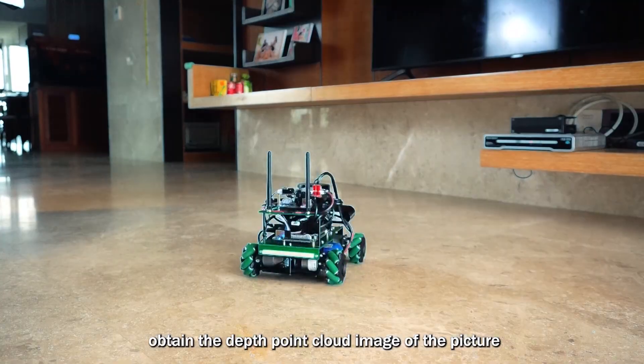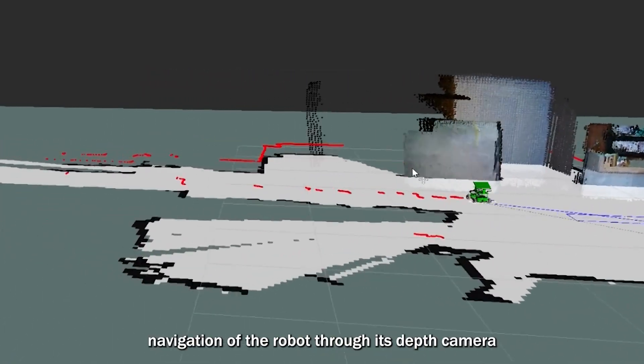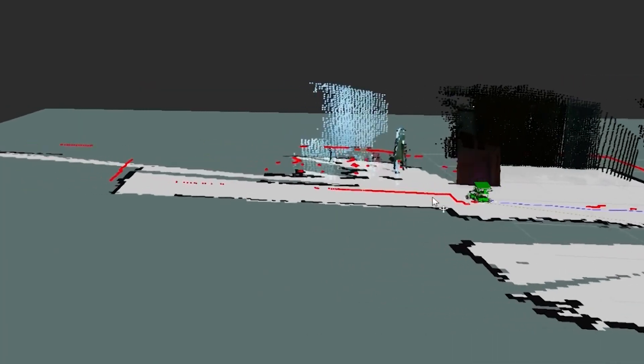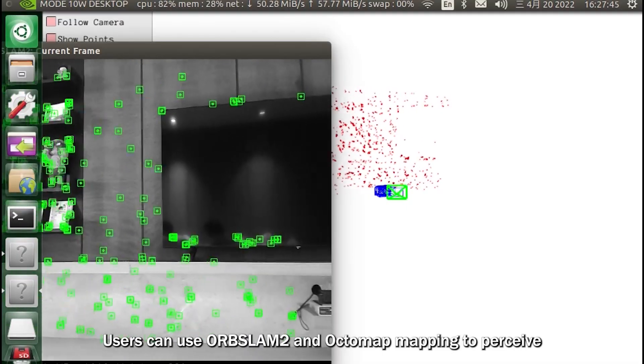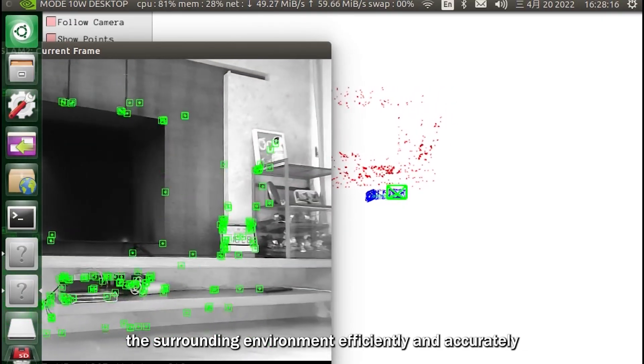Obtain the depth point cloud image and realize the 3D real scene navigation of the robot through its depth camera. Users can use ORB SLAM 2 and optomap mapping to perceive the surrounding environment efficiently and accurately.